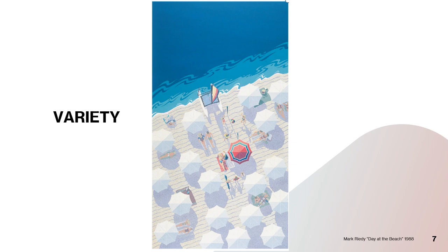That red umbrella and that sailboat — that's the success of variety. That's another principle, another play. If you want to write a definition for variety, write something like: variety is the differences — the many differences — that give a design its visual and compositional interest. The differences that give a design visual and compositional interest.